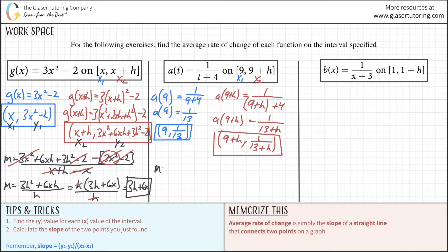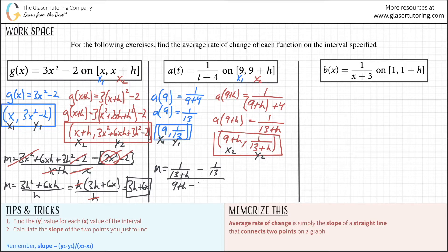Now that we have our two coordinate values, we plug them into the slope formula: y2 - y1 over x2 - x1. Label these x1, y1 and x2, y2. So y2 is 1/(13+h), minus y1 which is 1/13, all divided by x2 which is 9+h minus x1 which is 9. The 9s cancel. Now we want to find a common denominator for the two fractions in the numerator. Take the first fraction and multiply it by 13/13, then multiply the second fraction by the denominator of the other one.